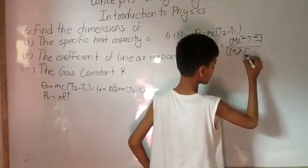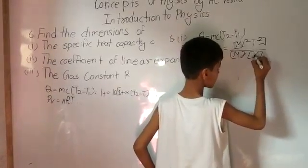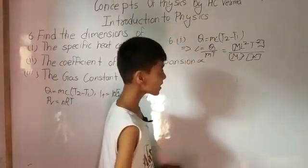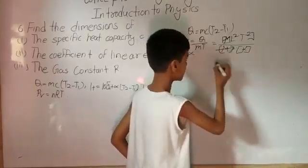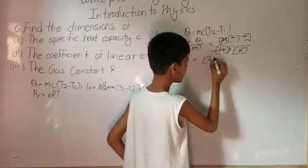K because here this T is our temperature which is denoted by K. Now here we can notice which can be cancelled. This M can be cancelled to this M. What is left? That is L square T power minus 2.